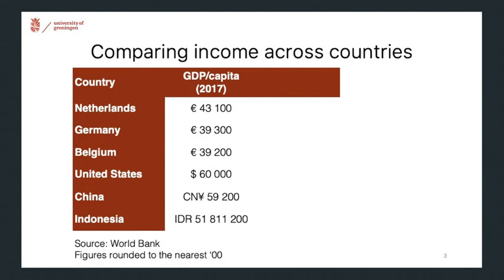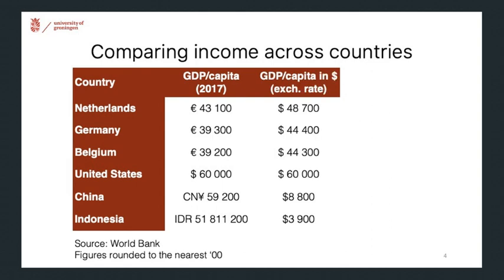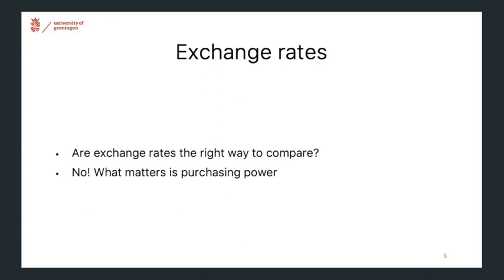Now, if we want to compare income across countries based on GDP per capita — GDP per person in the economy — we quickly run into the issue that there are different currencies. And comparing those numbers as they are is fairly meaningless. As a first step, we can use the exchange rate to the dollar to put them on a comparable footing. This shows that the United States has the highest GDP per capita at $60,000 and Indonesia comes out lowest at below $4,000. However, is this the right way of comparing income levels across countries? And what I'll explain is that this is not the right way to go.